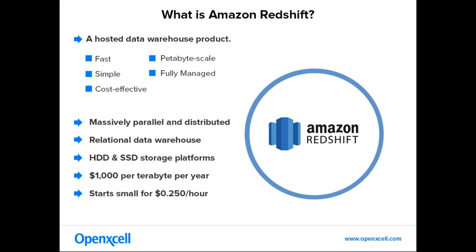Let's start with what is Amazon Redshift. It is a hosted data warehouse product of AWS. It is extremely fast, fully managed, easy to set up, and a cost-effective data warehousing solution. It is one of the fastest growing services of AWS. It has the ability to leverage massively parallel processing capabilities and distribute data and queries across multiple nodes, consistently delivering high performance at any volume of data. It is a relational data warehouse. It also handles administrative and monitoring activities for you, and provides both HDD and SSD storage platforms. It costs less than $1,000 per terabyte per year — roughly 10 times less compared to traditional data warehouses. To get started, you can try with a small instance starting at $0.25 per hour.